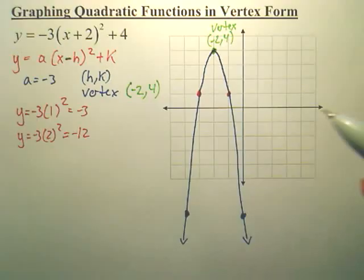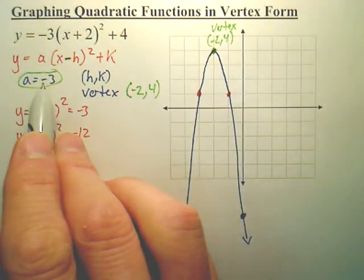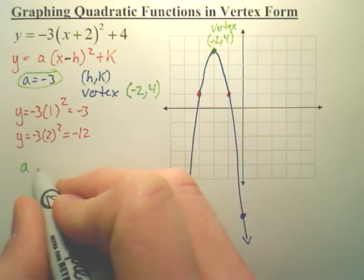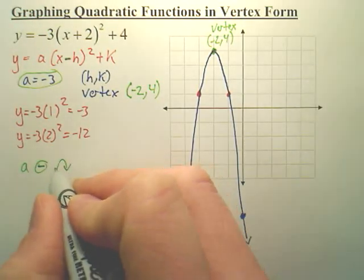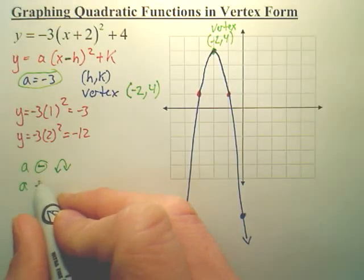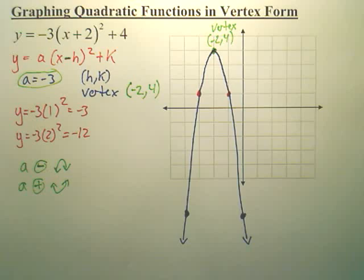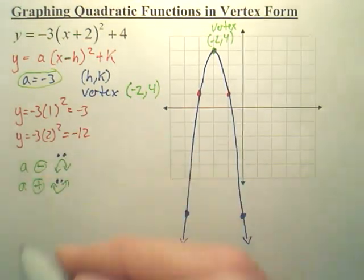Now, one more thing. What you've got to realize, your A value, this value is very important. If that value is negative, it's sad. It's frowning. So when your A value is negative, it's a sad little parabola. When your A value is positive, it's a happy little parabola. So you can think of it as happy little guy, sad little guy.